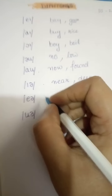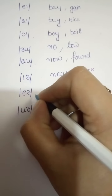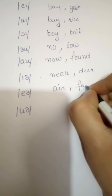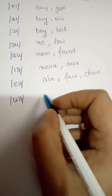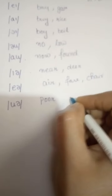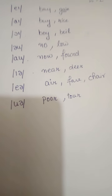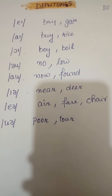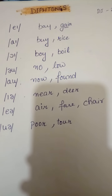The next diphthong is the 'air' sound as in 'fear' and 'chair.' Then the 'oo-er' sound as in 'poor' and 'tour.' So students, these are all 20 vowel sounds. I hope this discussion will be helpful for you in learning vowel sounds. Thank you.